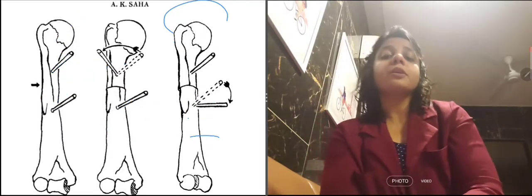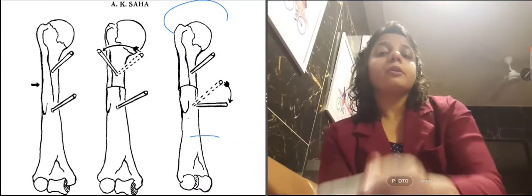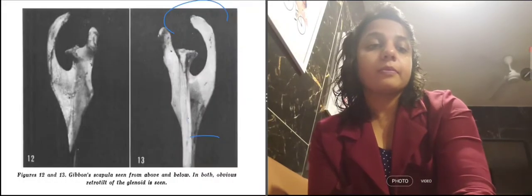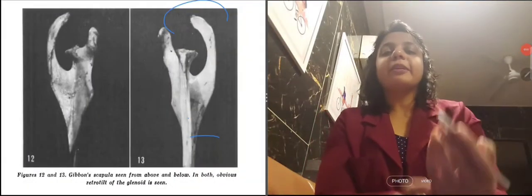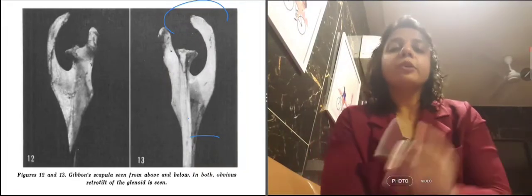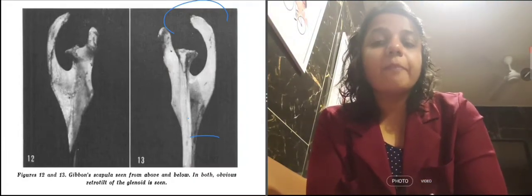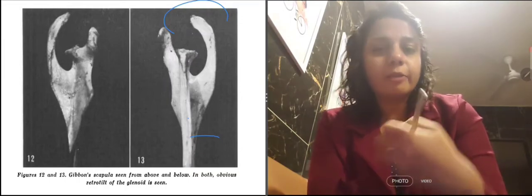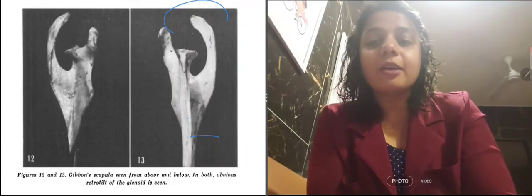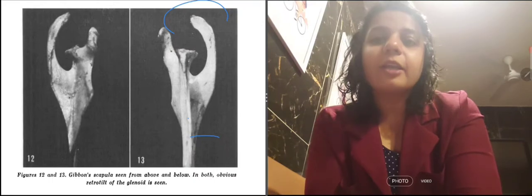Here it is shown how humeral osteotomy is helpful for decreasing retroversion. Everything is favoring stability in the shoulder joint. We know that retrotilt of the glenoid will provide more stability — and in primates, retrotilt of the glenoid is also greater, since everything in primates favors stability.